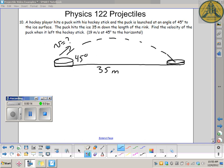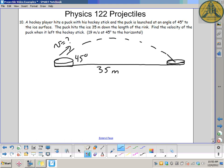A hockey player hits a puck with his hockey stick, which is a good thing to hit a puck with. The puck is launched at an angle of 45 degrees to the ice surface, hits the ice again 35 meters down the length of the rink. Find the velocity of the puck when it left the hockey stick. This is one of those questions that reads very innocently, but as you get going, you realize it's a little trickier than you once thought.